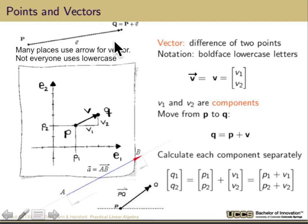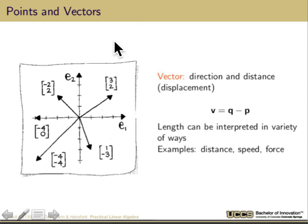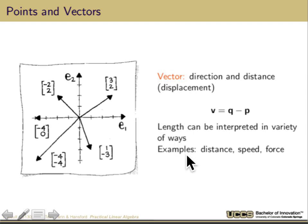Although you can think of vectors as the difference between two points, in a broader sense a vector is a direction and a distance — it's a displacement. v can be obtained by subtracting two points, so p minus q gives me v. But after doing that, I want to think of vector v as having its tail at the origin and its head pointing in some direction with some displacement. The length of that vector can be interpreted as distance, speed, or force — whatever we want it to mean in that space.